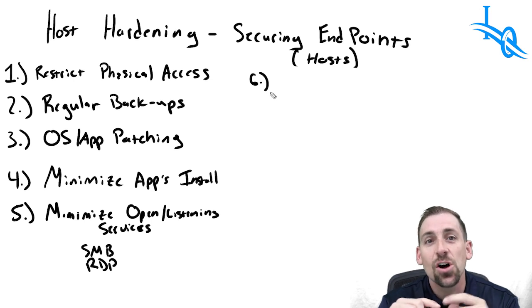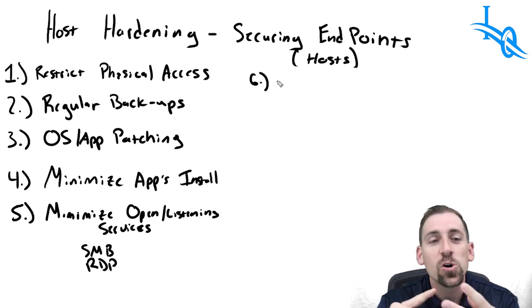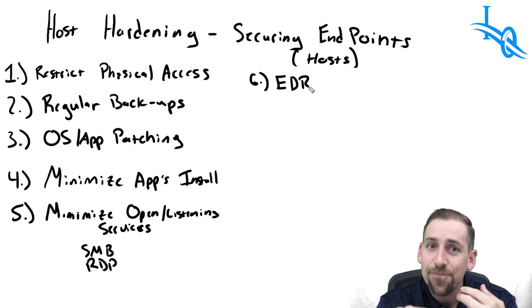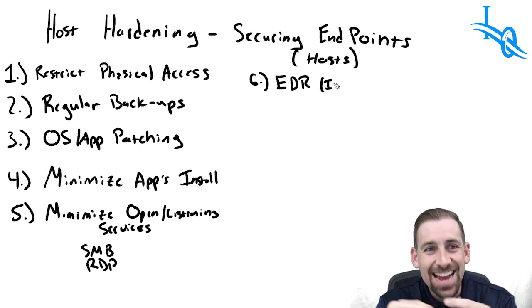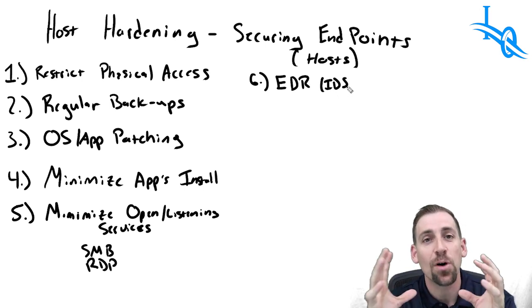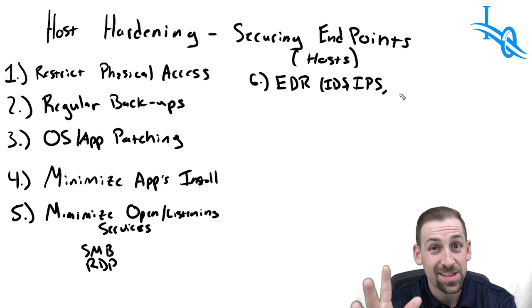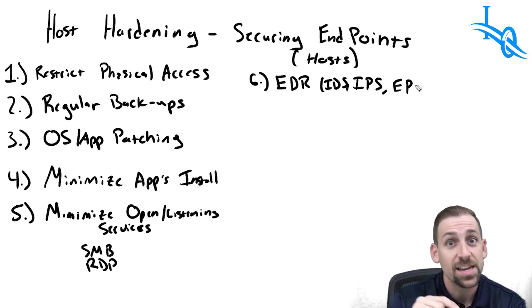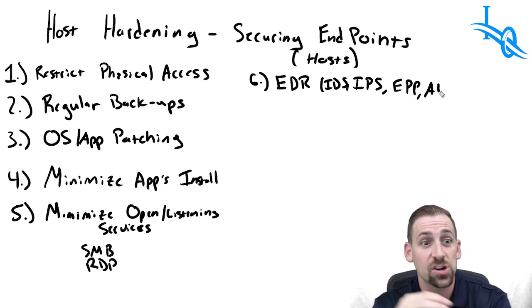Number six is installing endpoint detection: host-based AV, endpoint protection platforms, intrusion prevention, and IDS. Any number of these security tools can be installed on endpoints and utilized as a component of host hardening.